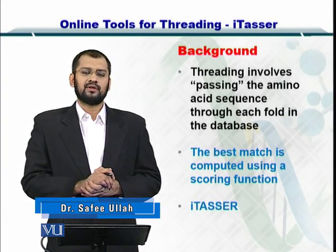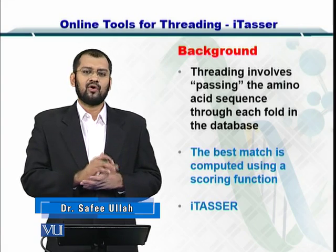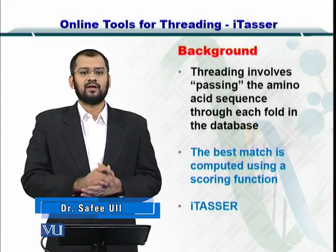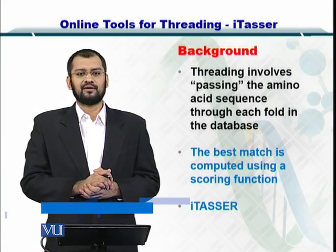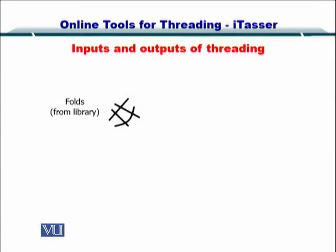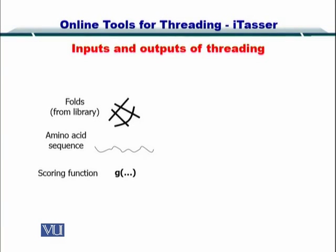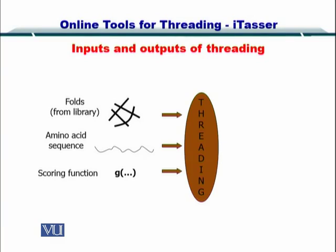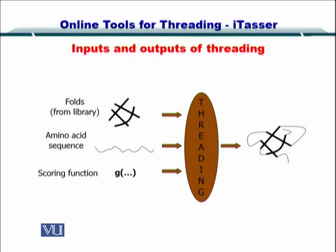I-TASSER is a tool that can be used to perform all of this work in a very easy and seamless manner. The inputs are the folds from libraries, the amino acid sequences, and the scoring function — these are input to a software which outputs the predicted structure. So now we are going to use I-TASSER.